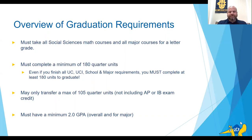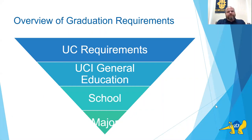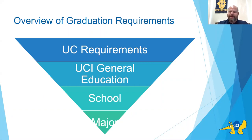Every student has to have a minimum 2.0 overall GPA and within their major. The next few slides deal with four distinct areas: UC requirements — the same for all UC campuses — UCI general education requirements, School of Social Sciences requirements that all social sciences majors must meet, and major-specific courses within sociology.